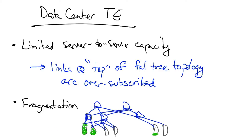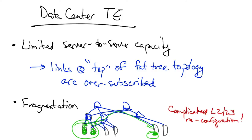For example, if the service denoted by green is running mostly in one part of the data center, but there's a little bit of it running on a virtual machine in another part of the data center, this might require traffic to traverse links of the data center topology hierarchy, thus significantly lowering utilization and cost efficiency. Reducing this type of fragmentation can result in complicated layer two or layer three routing reconfiguration.